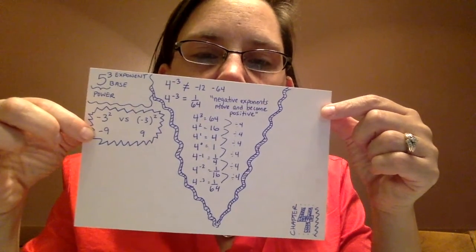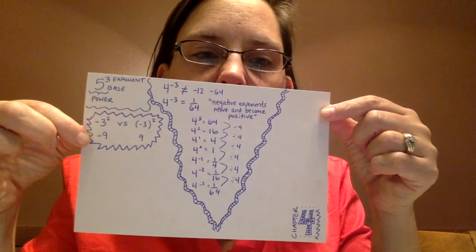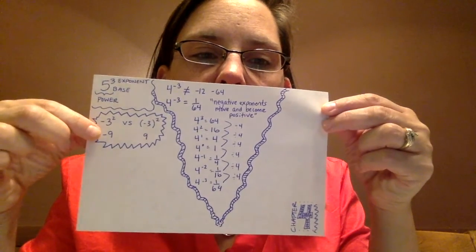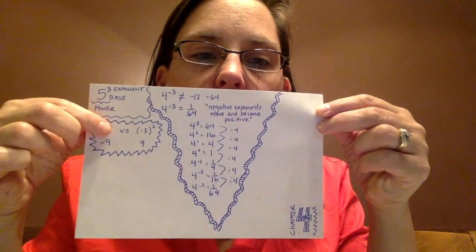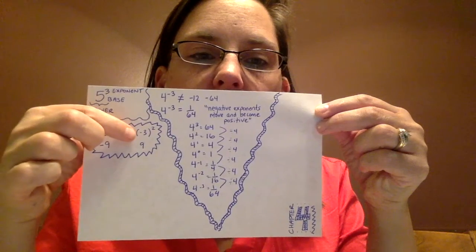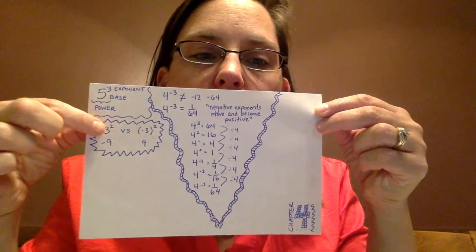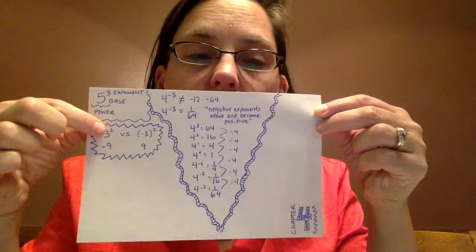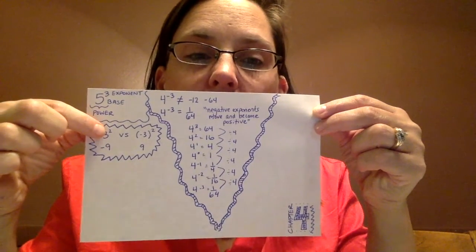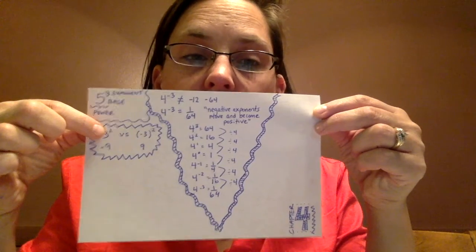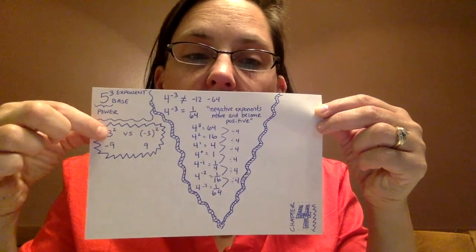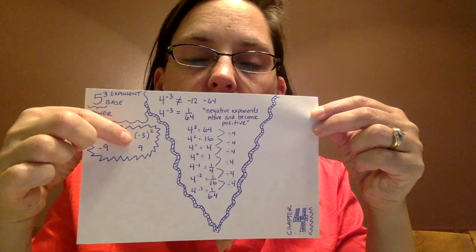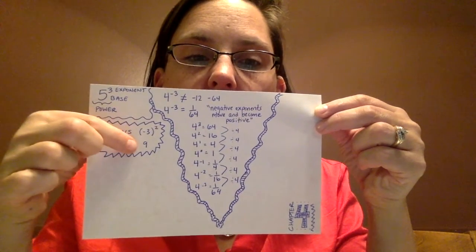Right below that, I did add another little piece of information. I know we talked about this during chapter 1, how the opposite of 3 squared is different than negative 3 squared. So the opposite of 3 squared is just like saying negative 1 times 3 squared. Well, 3 squared happens first, which is 9, and then the negative 1 times that makes it a negative 9, whereas this one is negative 3 times negative 3, which is a positive 9.